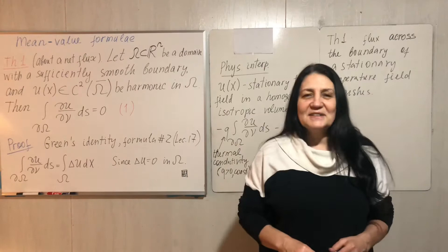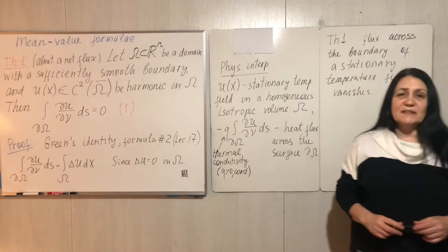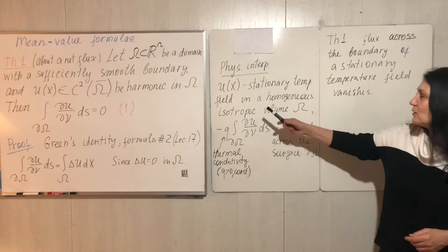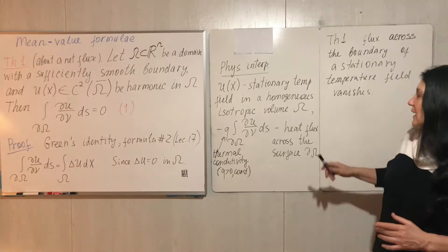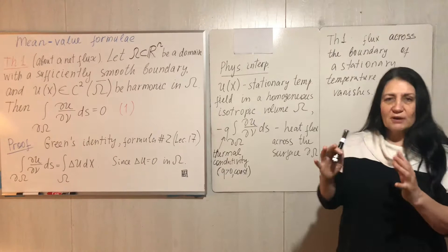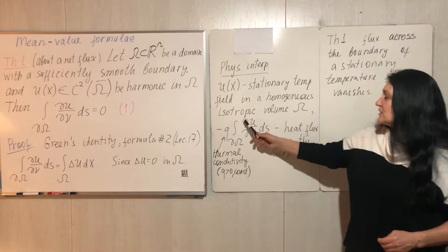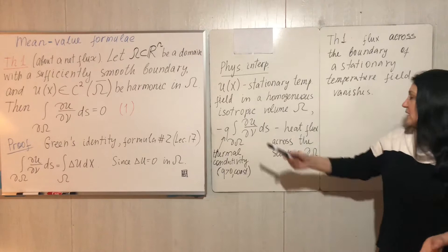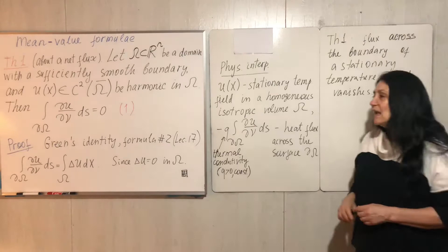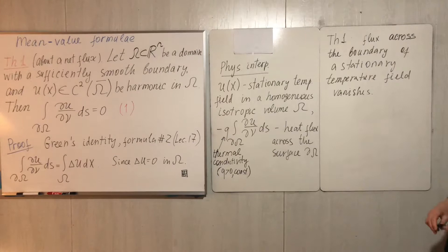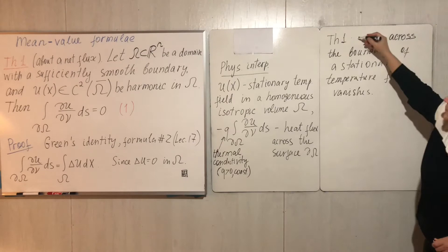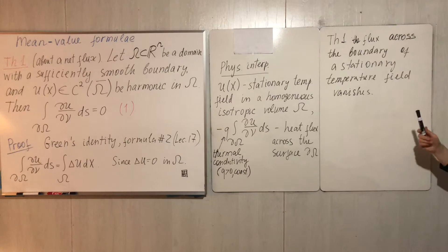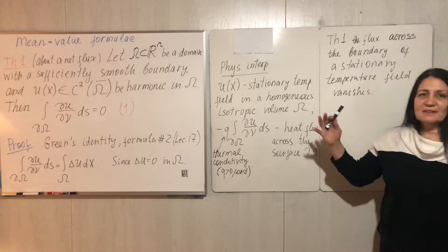This is a very simple proof. This formula has a physical interpretation in R^n and R³: if we think of function u as a stationary temperature field, and omega as some homogeneous isotropic volume, then this integral multiplied by a given constant can be interpreted as a heat flux across the surface. So our theorem has the simple meaning that the flux across the boundary of a stationary temperature field in domain omega just vanishes.